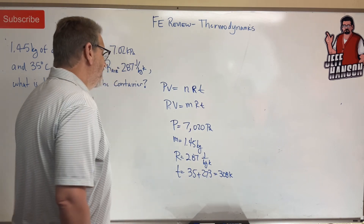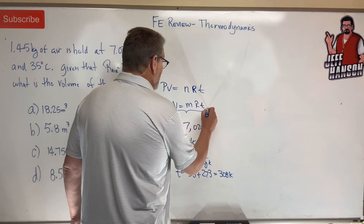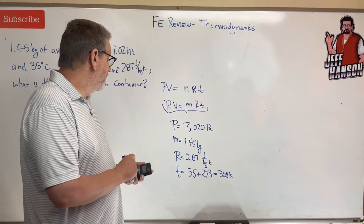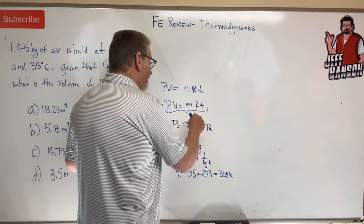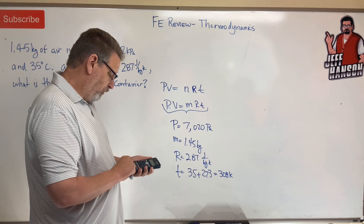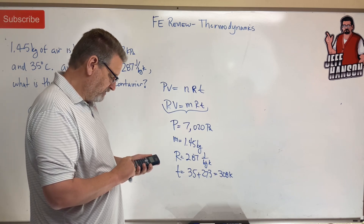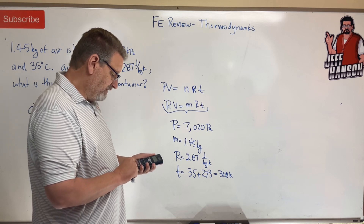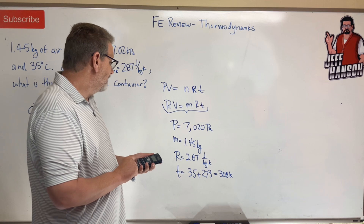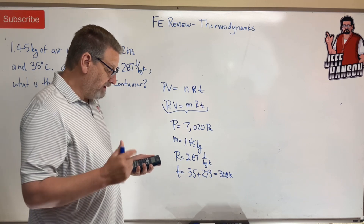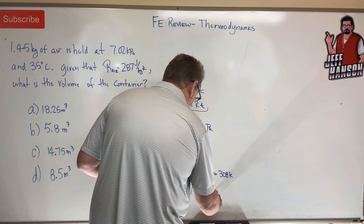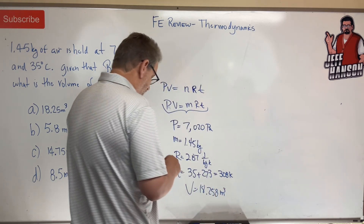Now we plug everything into the equation and solve for V, our volume. We take m, R, and T, multiply them together, then divide by P. So: 1.45 × 287 × 308, divided by 7,020 — and that equals 18.258. There you go — do we have that answer?